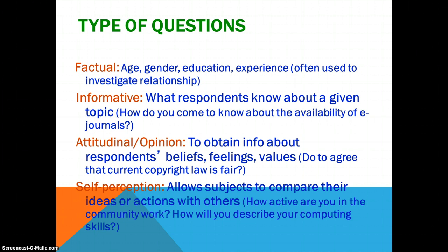The kinds of questions we ask might be factual — asking people's age, gender, education, or experience. We could ask informative questions: what do people know about a topic? And we can structure it so that those questions are closed-ended as well. We can do a survey on attitudes or opinions, and one real good way to do those are with the intensity scales, like the Likert scale, that I talked about in the previous presentation. We can also do self-perception type questions, allowing people to compare their ideas or actions with others.